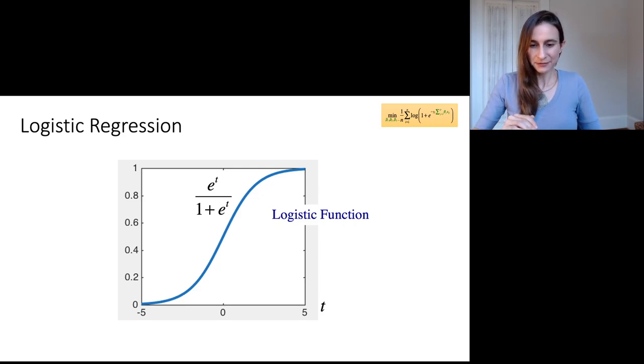So if t is along the x-axis here, and if t is really big, then that one in the denominator is like minuscule. So you'll get a value close to one for the logistic function. And then if t goes off to negative infinity, the numerator will be essentially zero. So you'll get something that's close to zero.